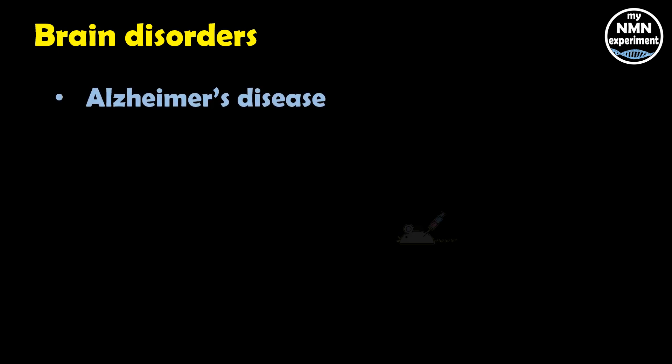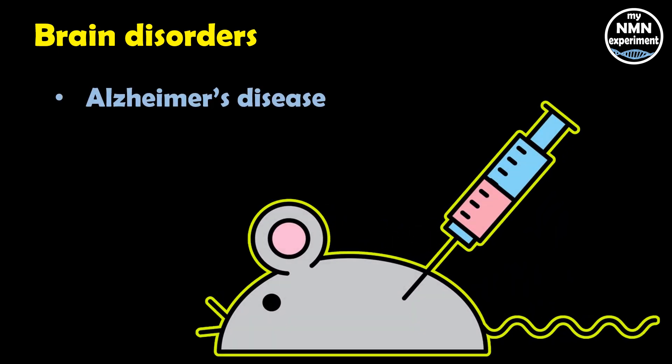Quercetin may lower your risk of chronic brain disorders. Research suggests that quercetin's antioxidant properties may protect against brain disorders such as Alzheimer's and dementia. In one study, mice with Alzheimer's disease received quercetin injections every two days for three months.